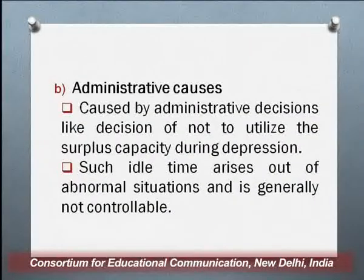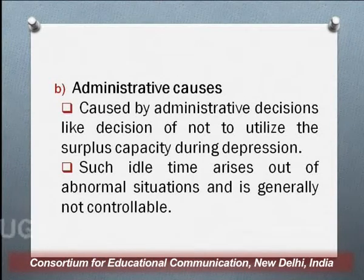Administrative causes refer to idle time caused by administrative decisions, like decisions not to utilize the surplus capacity during a depression. Your plant can produce a certain number of units, but because of the slowdown, full utilization of the plant is not made, so the worker will remain partly idle. Such idle time arises out of abnormal situations and is generally not controllable — for example, due to flood, the machinery and plant cannot be operated.